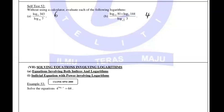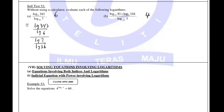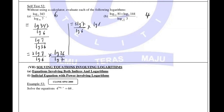For the next part, change base to base 10. Write lg343 over lg6, times lg7 over lg36. Actually, I need to invert the second fraction. 343 is 7^3, so bring the 3 in front. I keep lg6, then 36 goes up and 7 goes down — I just flip it upside down. 36 is 6^2, and there's a lg7. Cancel lg7 and cancel lg6. You're left with 3 times 2, which equals 6.